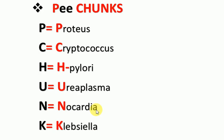N is for Nocardia. Nocardia is found in soil and water and it can affect the brain, lungs, and skin. It causes Nocardiosis, and the symptoms of Nocardiosis are almost similar to pneumonia and tuberculosis — chest pain, cough with sputum, weight loss, and difficulty in breathing.